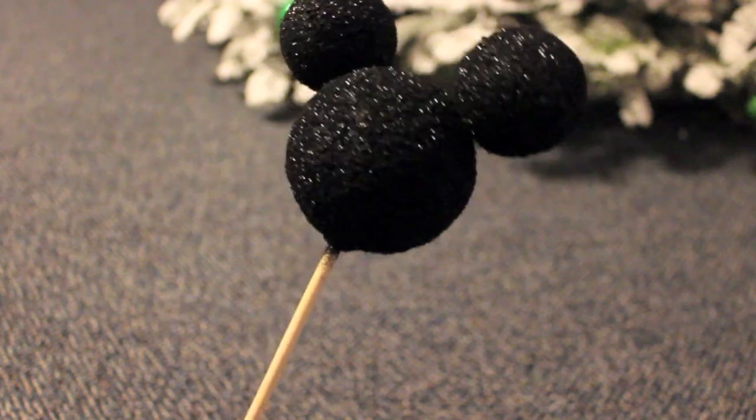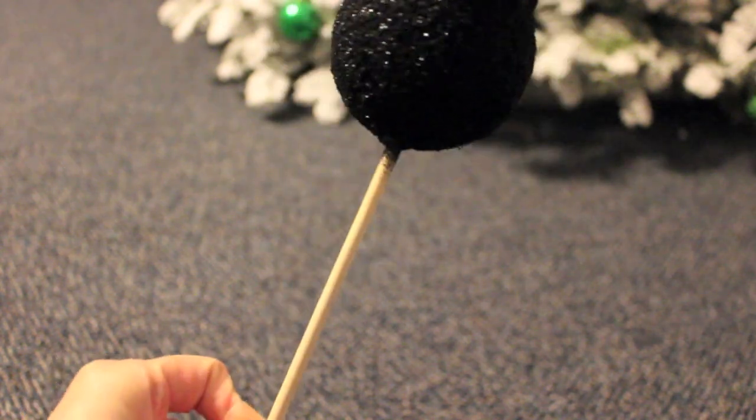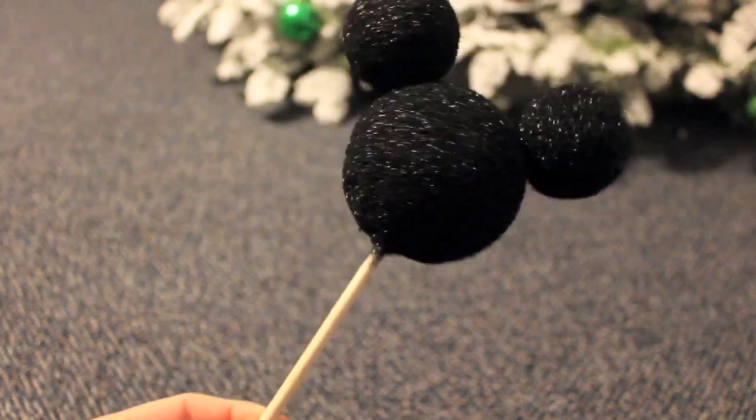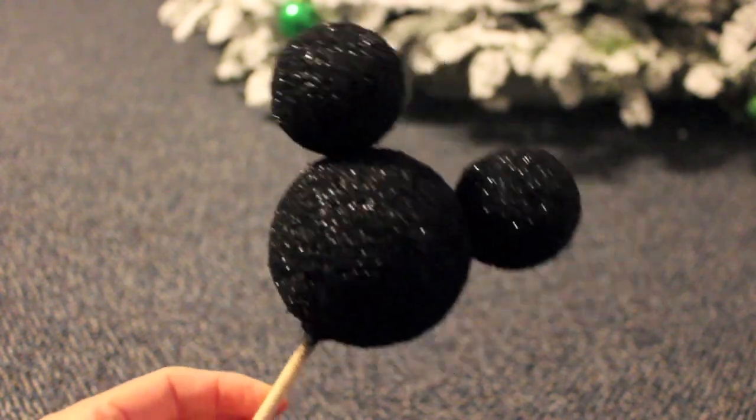To make my Mickey head, I used a 3.3 inch styrofoam ball. I then stuck a long wooden dowel through the middle, hot gluing around it to make it stable.